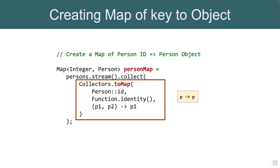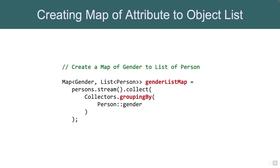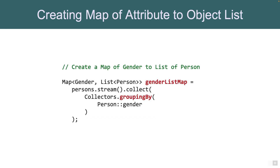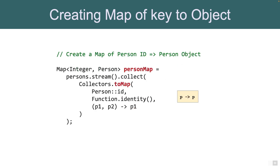In most cases we actually want to map an attribute of the person to the list of persons. For example, we want to map gender to the list of persons so we can easily find all males or females by looking up the map. We use Collectors.groupingBy(), passing Person::gender as the method reference — that's the key on which grouping is done. The output is a map with gender as the key and a list of Person as the value. Recall that we did something similar in imperative style, which was a lot more complex.